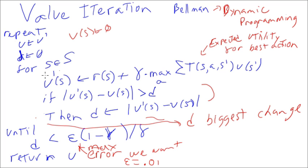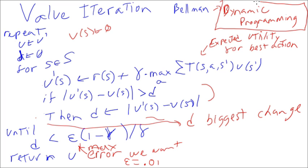This algorithm takes a little while because you have to iterate over all states and do it over and over again. Basically, the utility values get closer and closer to the right value — they converge. This idea of starting with a recursively defined function, setting initial values, and iterating until convergence is exactly dynamic programming. We start with some initial values and go around and around until it converges.